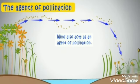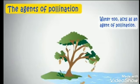Wind also acts as an agent of pollination. Water too acts as an agent of pollination. Pollination occurs in water when pollen drifts on the water to contact flowers directly. This takes place in water plants like hydrilla and vallisneria.